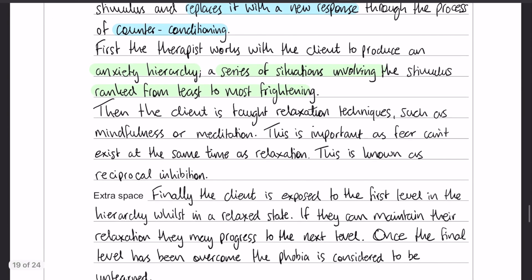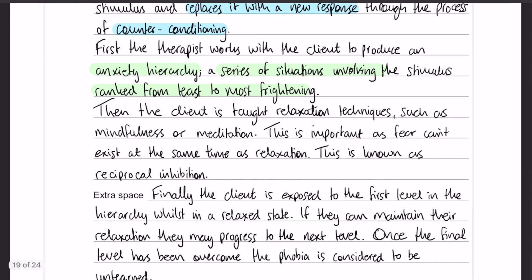we have our three steps, or our three stages, of systematic desensitization. So our first one is the production of an anxiety hierarchy. Moving on, the second bit of systematic desensitization is the teaching of relaxation techniques. Give a couple of examples of what they might be, like mindfulness, meditation, breathing techniques, whatever. It doesn't matter what your examples are, as long as you have a couple.